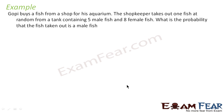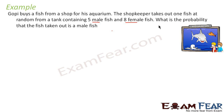Gopi buys a fish from a shop for his aquarium. The shopkeeper takes out one fish at random from a tank which contains 5 male fish and 8 female fish. We have to find the probability that the fish taken out is a male fish. So this is the aquarium and the shopkeeper takes out one fish from this — you see male fish is 5 and female is 8.